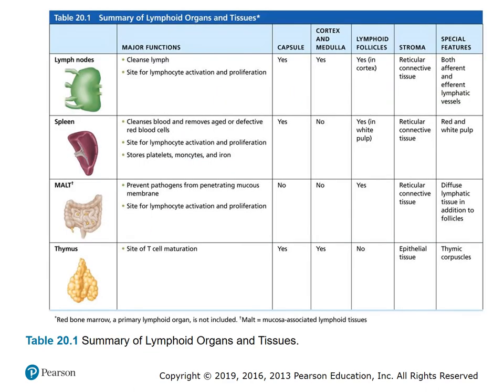Table 20.1 is a summary of lymphoid organs and tissues. You can see the lymph nodes, spleen, MALT, and thymus listed with their major functions, whether they have a capsule, whether they have a cortex and medulla, whether they have lymphoid follicles or stroma, and some special features of each one of those organs or tissues.